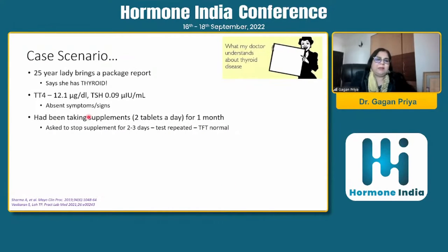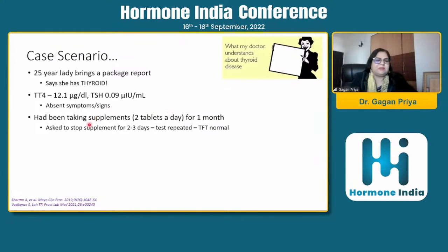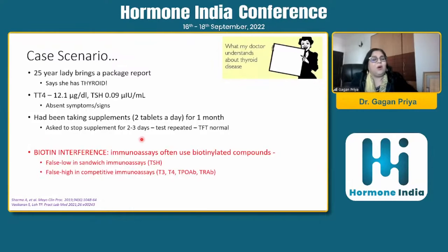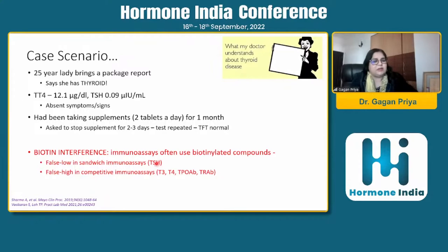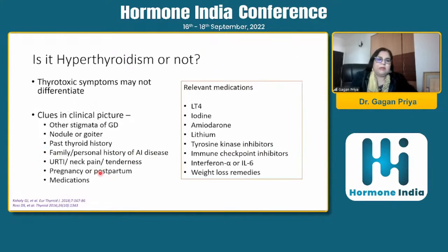A case scenario: a 25-year-old lady comes with a package report showing elevated T4 and low TSH but no clinical signs or symptoms. On careful history, she had been on supplements for the last one month. She stopped the supplements and returned two to three days later with normal thyroid hormones. She was taking a hair supplement containing high doses of biotin — two tablets a day. Biotin can interfere with thyroid hormone assays, causing false low values in sandwich assays for TSH, and false high values for T3, T4, and even antibody titers. These lab abnormalities must be excluded.